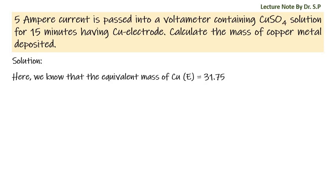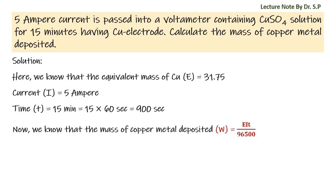Here we know that the equivalent mass of copper E is equal to 31.75, because the atomic mass of copper is 63.5. Given amount of current I is equal to 5 ampere. Time t is equal to 15 minutes, that is equal to 15 into 60 seconds, that is equal to 900 seconds.